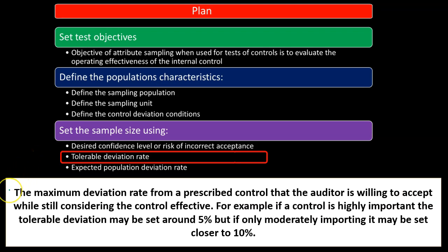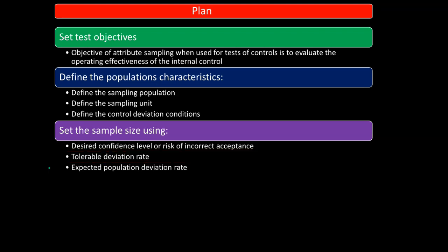The tolerable deviation rate is the maximum deviation rate from a prescribed control that the auditor is willing to accept while still considering the control effective. For example, if a control is highly important, the tolerable deviation may be set to 5%, but if it's only moderately important, it may be set to 10%. We accept these deviations and still conclude that the control is effective.